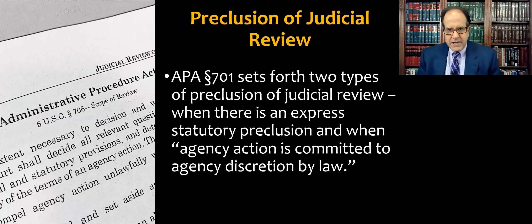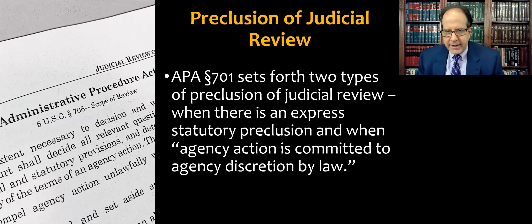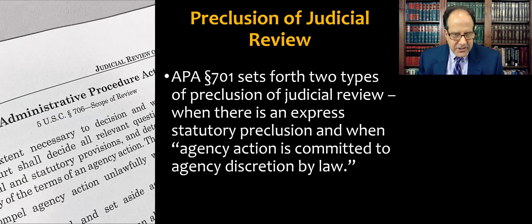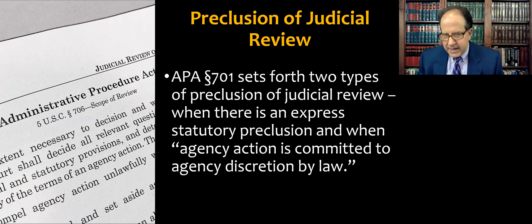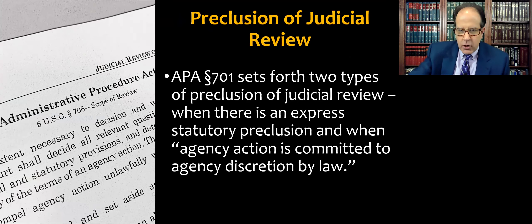One example is in APA 701, and this sets forth two types of preclusion of judicial review: first, when there's an express statutory preclusion, and then also when an agency action is committed to agency discretion by law.